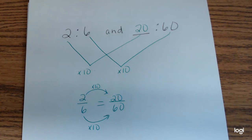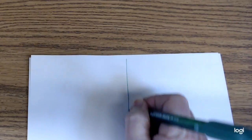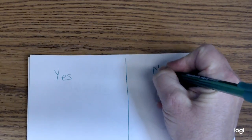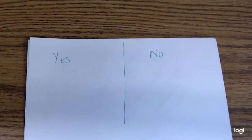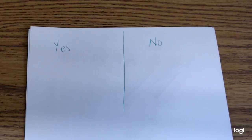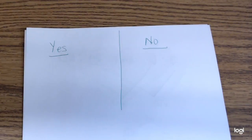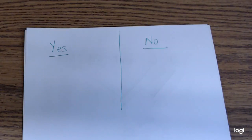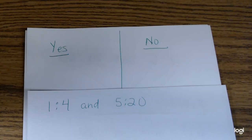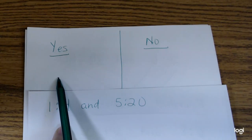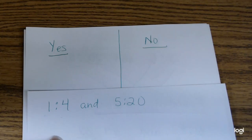I'll put those in your notes, and I have a little bit more. In your notes, draw a line and write yes on one side and no on the other. I'm going to give you two ratios, and if they are equivalent I want you to write them on the yes side, and if they are not equivalent I want you to put them on the no side. Here's your first one: 1 to 4 and 5 to 20 — are these ratios equivalent?